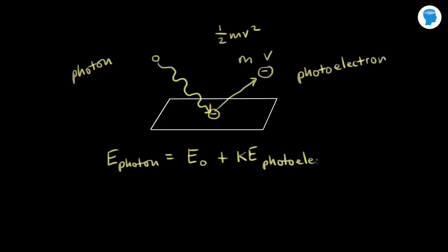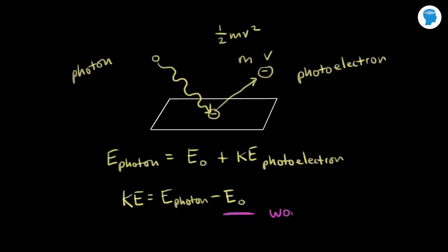If you wanted to solve for the kinetic energy of that photoelectron, it would be: kinetic energy equals the energy of the photon minus the energy necessary to free the electron from the metallic surface. This E₀ — you might see it written with a different symbol — is the work function. The work function is different for every kind of metal; it's the minimum amount of energy necessary to free the electron.